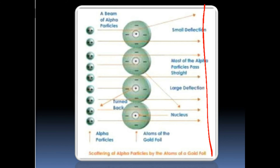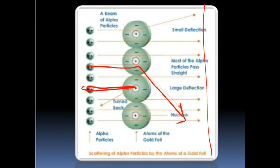Very few of the alpha particles changed their directions, making very small angles. And very, very few were bounced back — rebounded — making some angle.